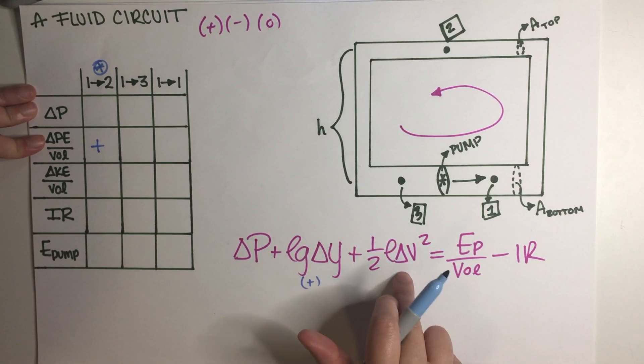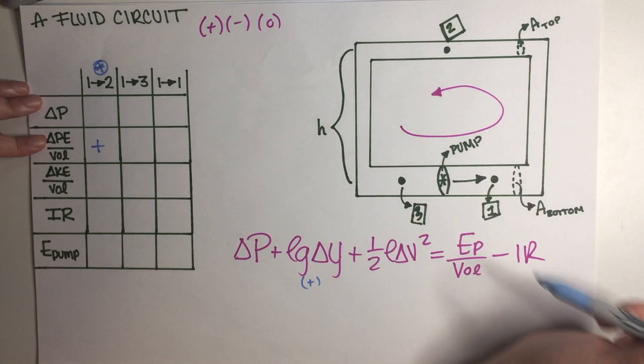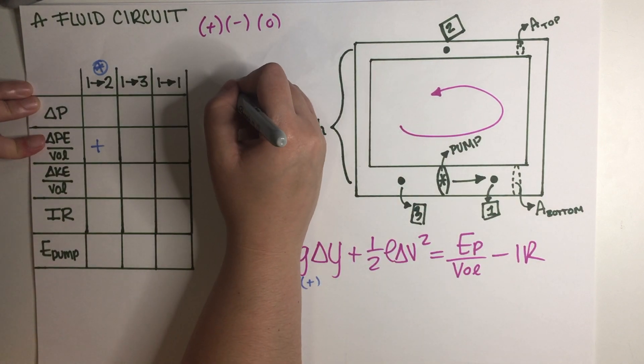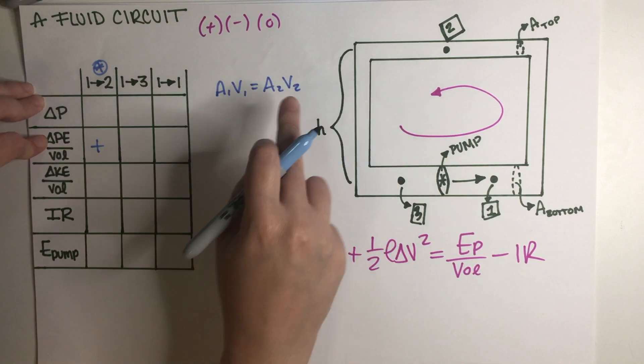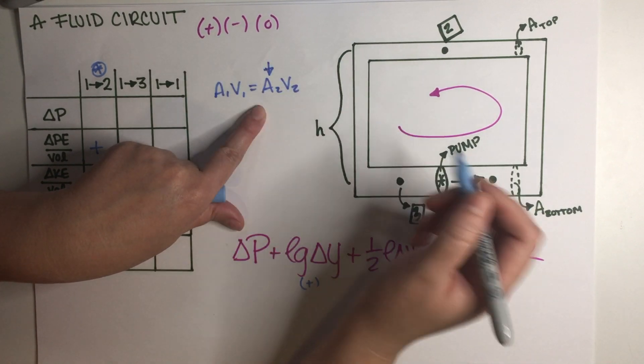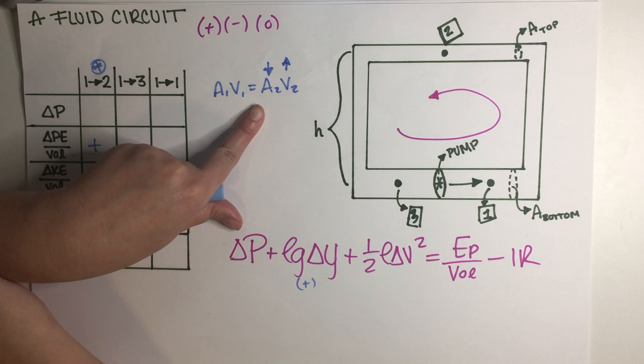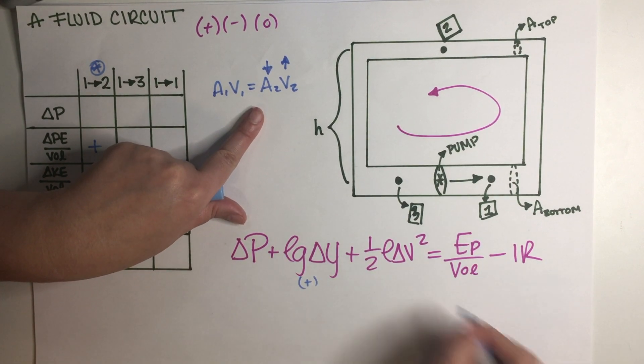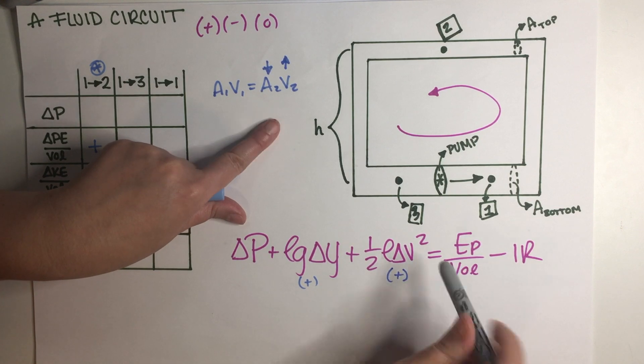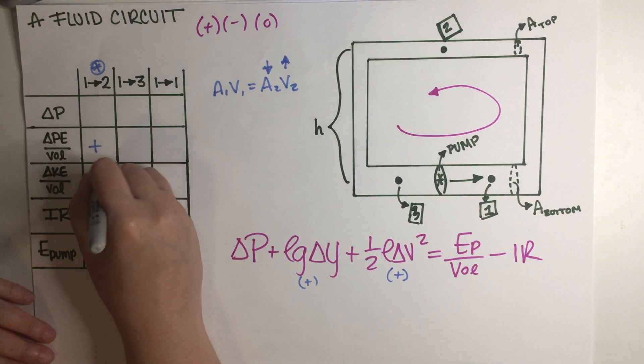Now this term over here, we do have a change in area so the area goes from big to small. Just remembering that because of continuity A₁v₁ has to be equal to A₂v₂. If we go from a big area to a smaller area then our velocity needs to go up like this. This means that final minus initial is going to be positive as well because you went from slow to fast. So this is positive as well.